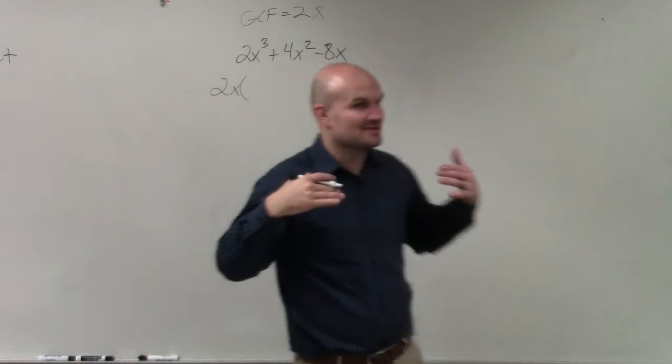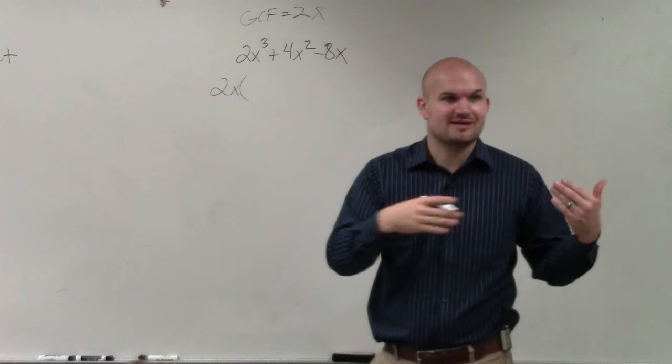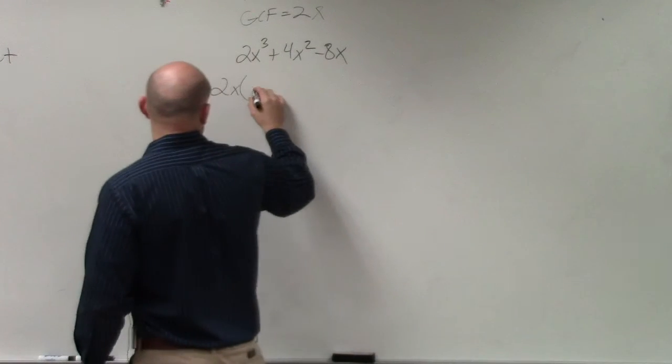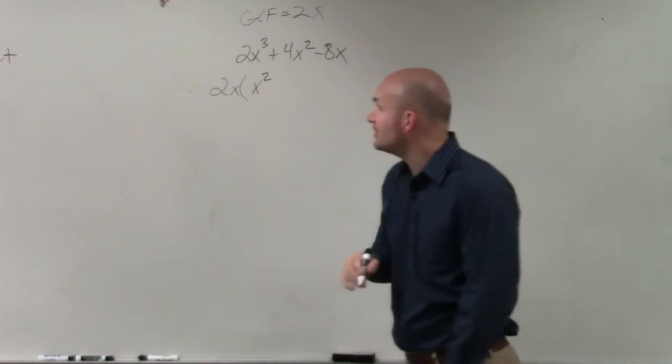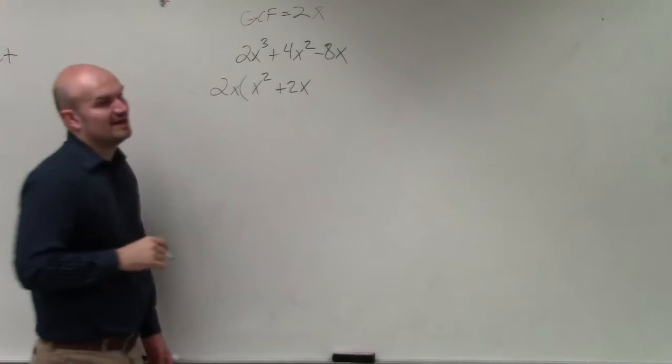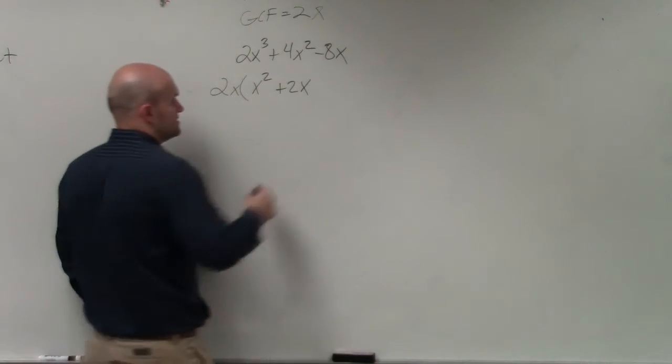And basically, when we're factoring out a 2x, it's like dividing out a 2x out of every term. So 2x cubed divided by 2x is just going to leave us with x squared. 4x squared divided by 2x gives us 2x. And negative 8x divided by 2x is going to give us negative 4.